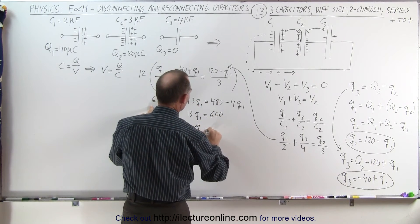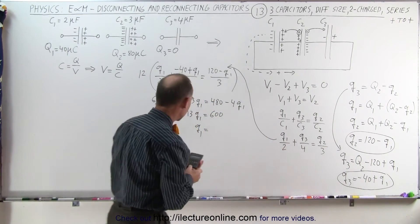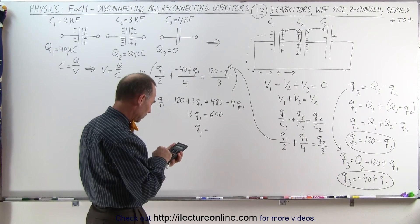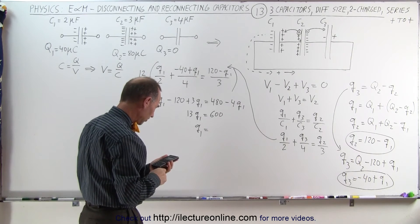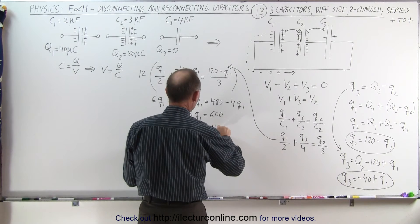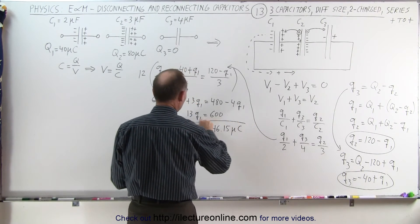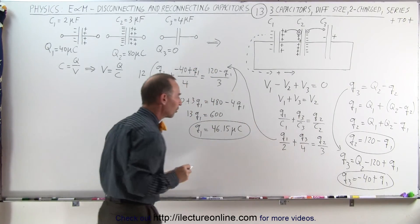And so Q1 is equal to, for that we better grab a calculator, 600 divided by 13 equals 46.15 microcoulombs. 46.15 microcoulombs. So that's the final charge on the first capacitor.